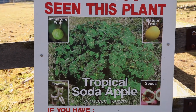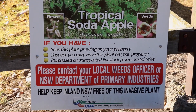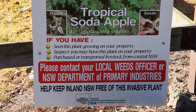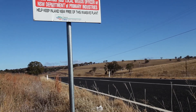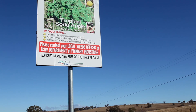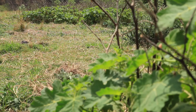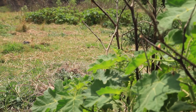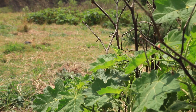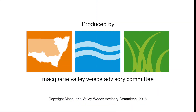Tropical Soda Apple is a declared Class 1 weed across the state, which means the plant must be eradicated from the land and the land must be kept free of the plant. Under a Class 1 declaration, Tropical Soda Apple is a notifiable weed and you must contact your local weeds officer or the Department of Primary Industries within 24 hours of its discovery.